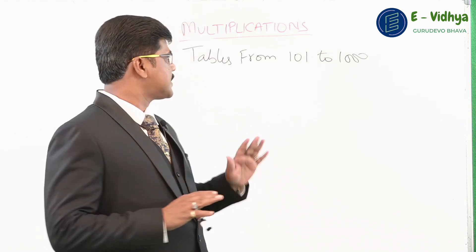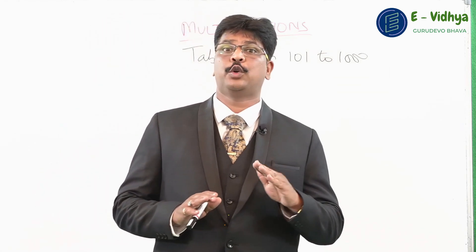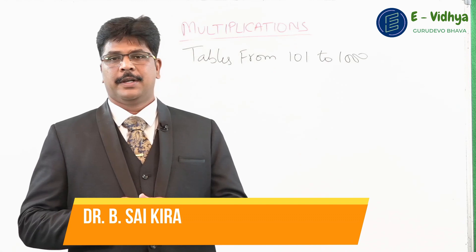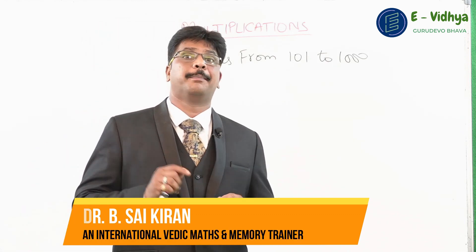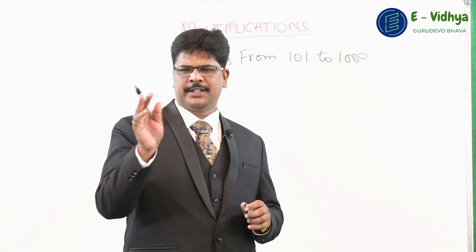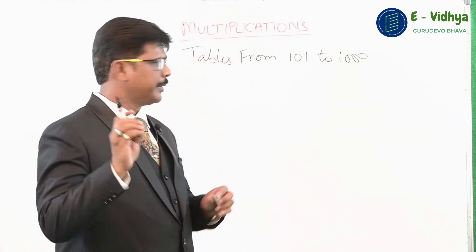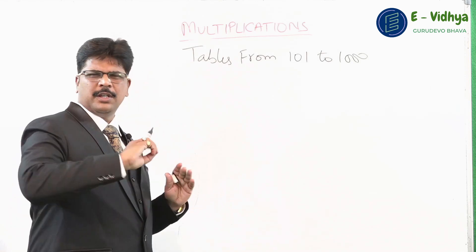Now let's see the next topic: tables from 101 to 1000. Here we apply the same distributive property, but we also apply the balancing rule. We can accomplish writing the table of any number from 101 to 1000 in just a few seconds.